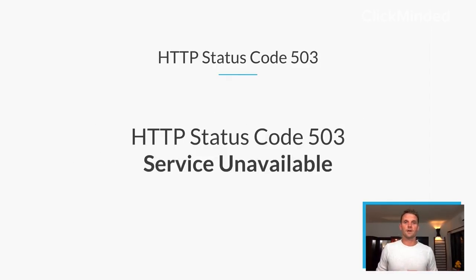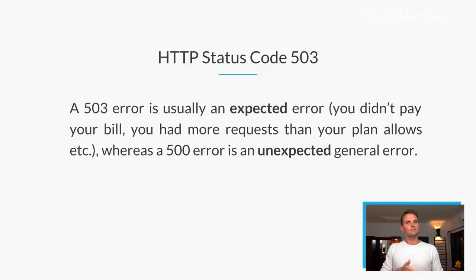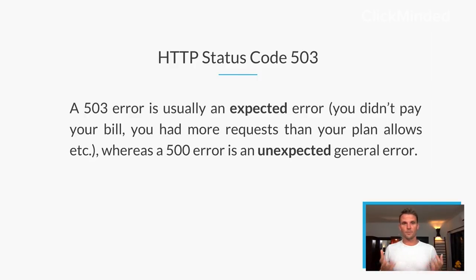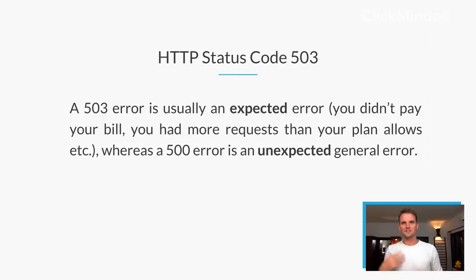A 503 — Service Unavailable. On the server side, this is similar to a 500 error, but it means the server is unavailable in an expected way. A 500 error is usually unexpected — something went wrong and we don't know what. With a 503 error, it's usually an expected error that the server intentionally sends — it usually means you didn't pay your bill or you had more requests than your plan allows. Regardless, you just have to contact your web host to get it sorted.